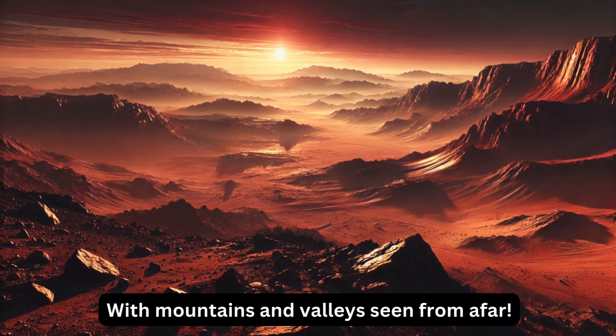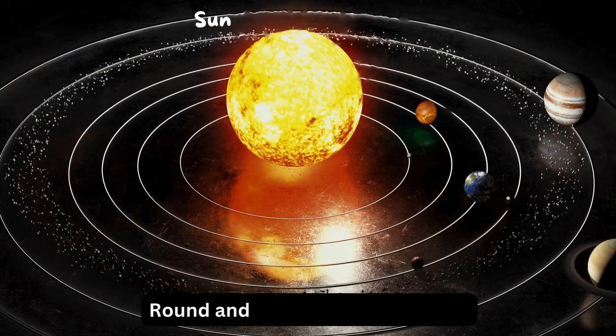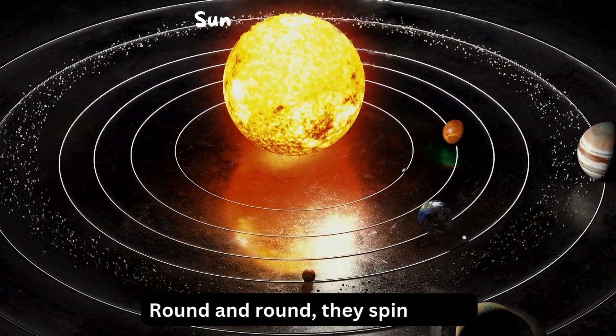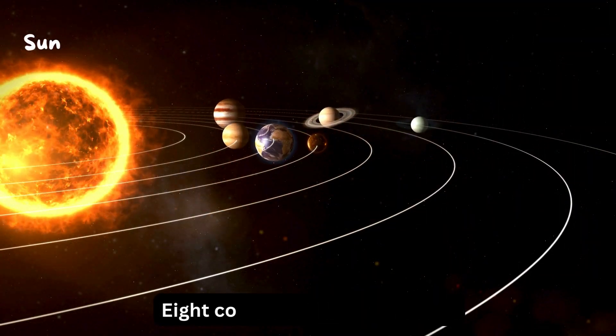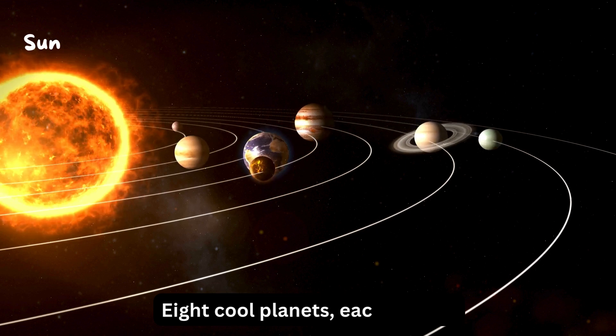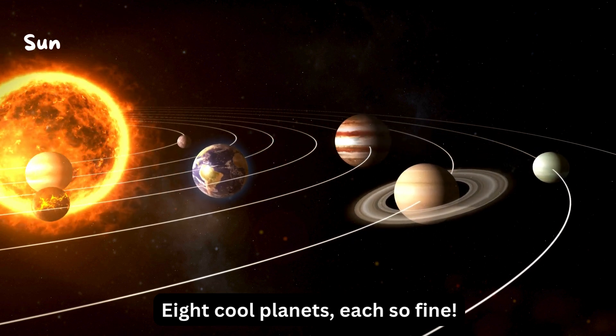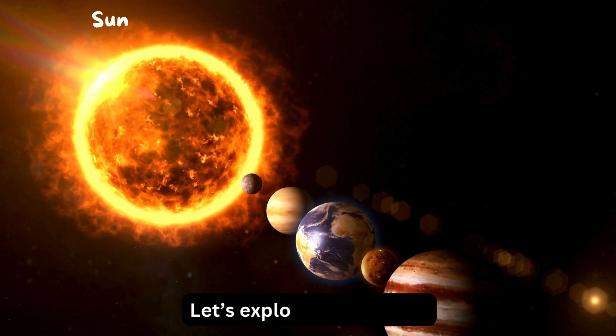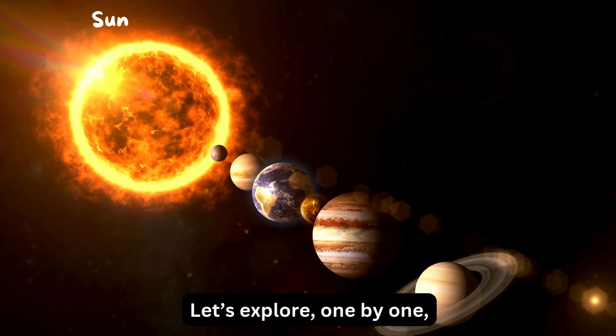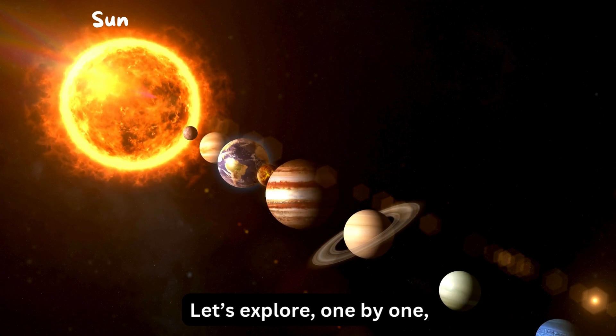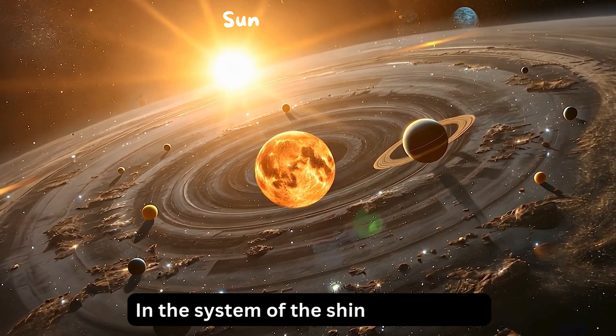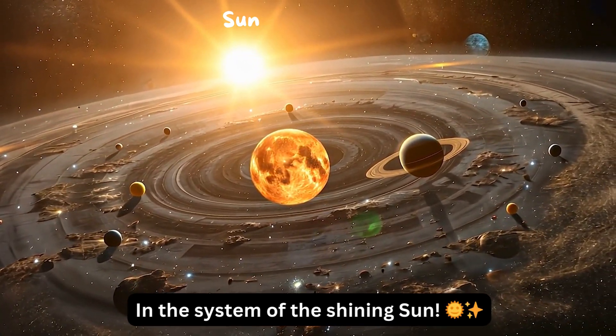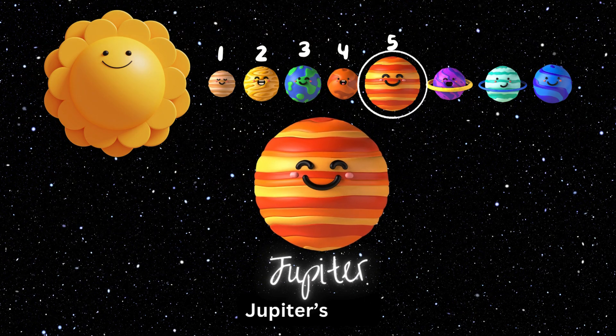Round and round they spin in line, eight cool planets, each so fine. Let's explore, one by one. In the system of the shining sun.